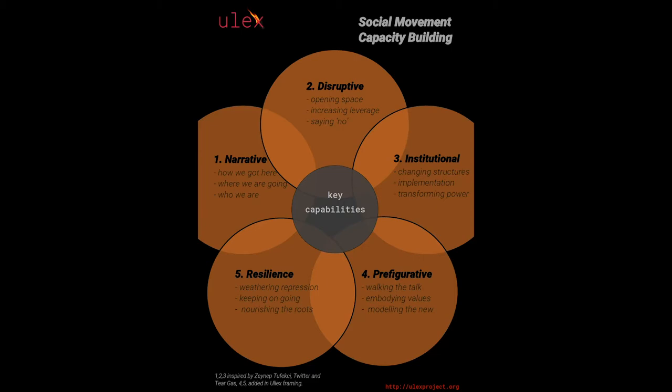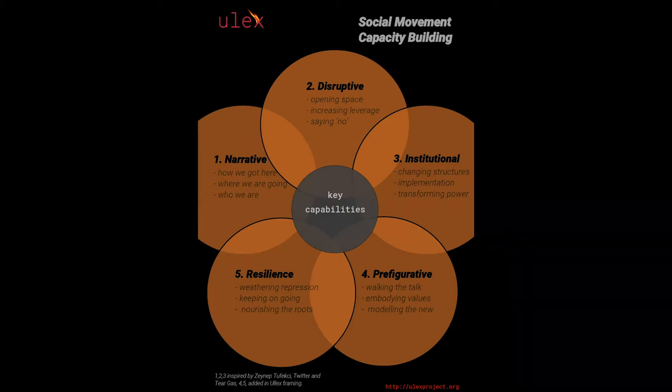Institutional capability means changing structures, implementing vision, and transforming power relationships. These three capabilities are often referred to — I first came across them in a book by activist Zeynep Tufekci called 'Twitter and Tear Gas,' which drew on research into the Arab Spring and the uprisings in Turkey.